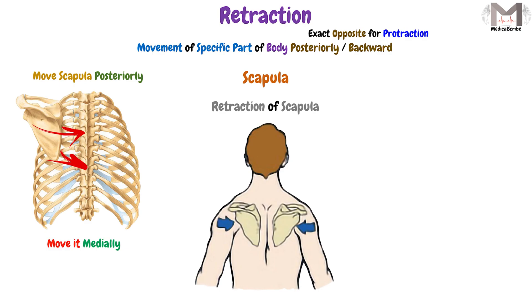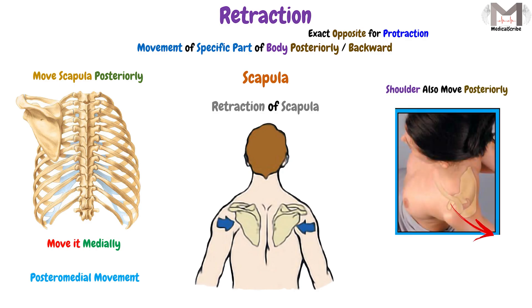So this movement of the scapula in the retraction is known as posteromedial movement, because we move the scapula posteriorly and at the same time we move it toward the midline of the body. As a result of this movement, the shoulder will be moved posteriorly. So the meaning of the retraction term is to move a specific part of the body posteriorly.